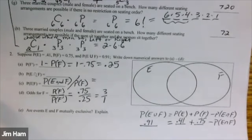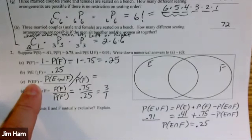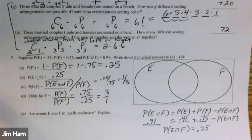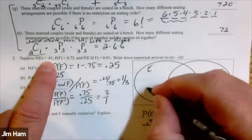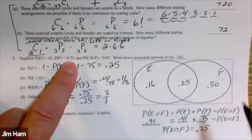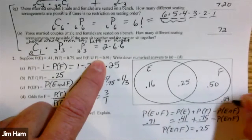So using the conditional probability formula, E intersect F divided by the probability of F is 0.25 over 0.75, which equals one third. Putting probabilities in the Venn diagram: the intersection is 0.25, probability of E is 0.41, so 0.16 is outside in E only, 0.50 is in F only so that those add to 0.75, and 0.09 is outside both circles so that all four regions add to 1. You can answer probabilities from the Venn diagram as well.